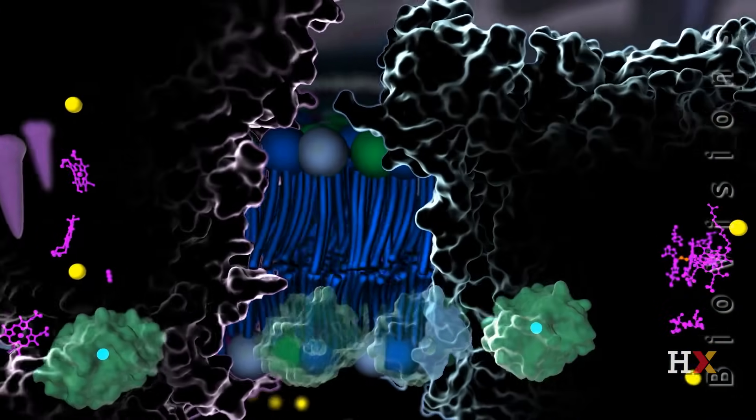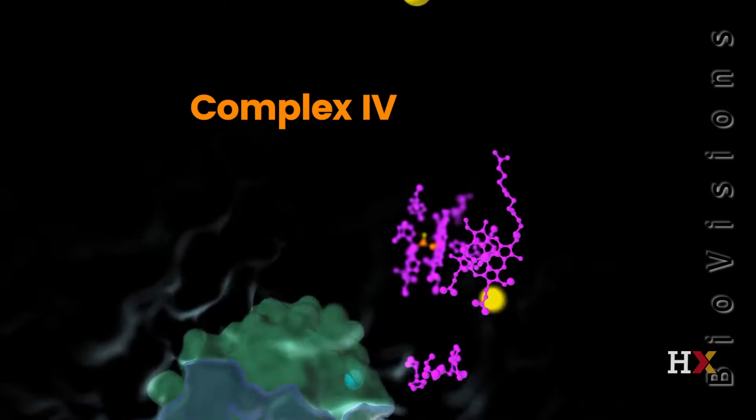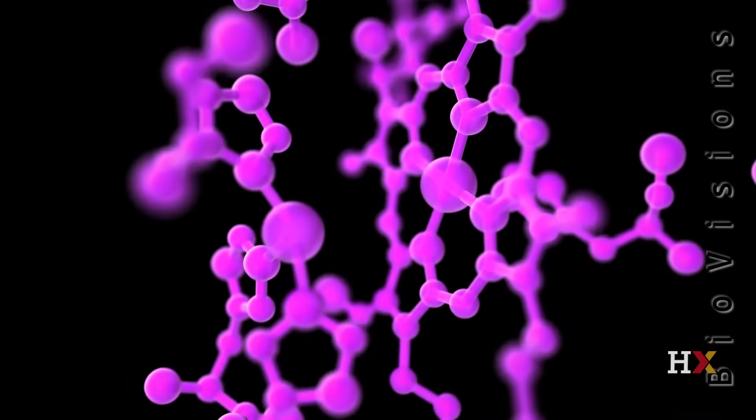The electron transport chain ends in complex four, where a series of reactions involving four electrons converts a molecule of oxygen to two molecules of water. The proton gradient is strengthened because four protons from the matrix are incorporated into water molecules and another four are pumped into the intermembrane space.